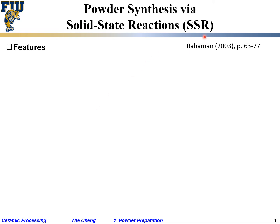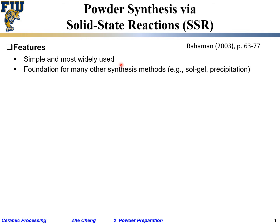Another method that is very important for synthesis to produce ceramic material is the so-called solid state reaction, or SSR. This is the foundation for many ceramics — it's simple and the most widely used method. Solid state reaction is also the foundation for many other more fancy chemical routes, like sol-gel, precipitation, whatever.